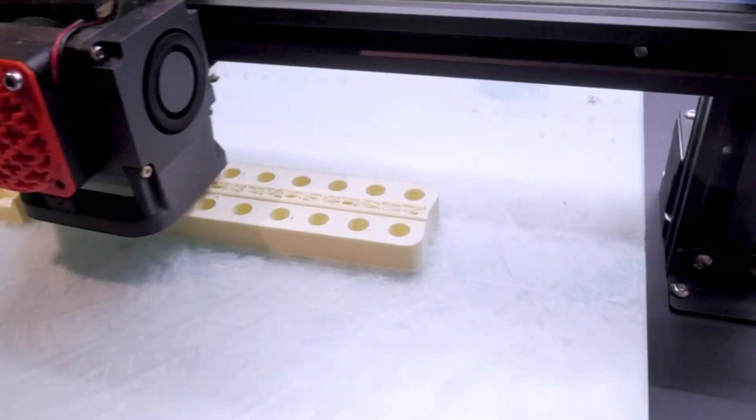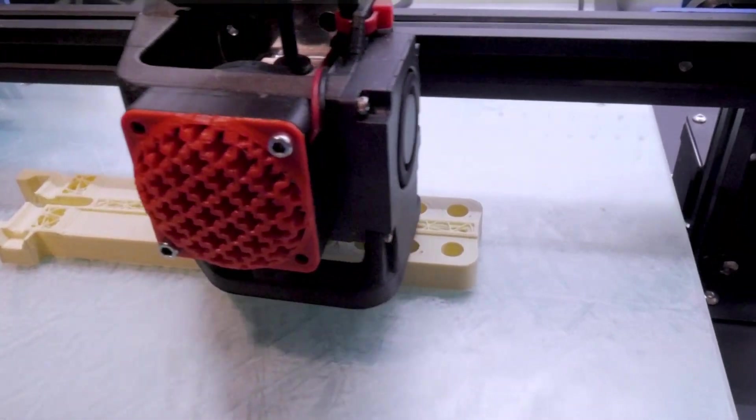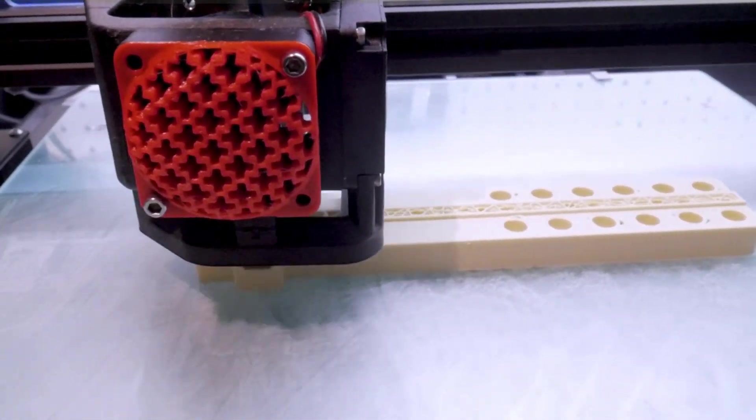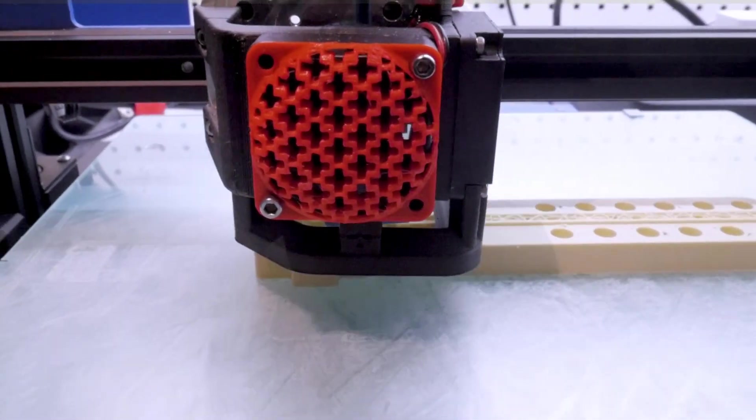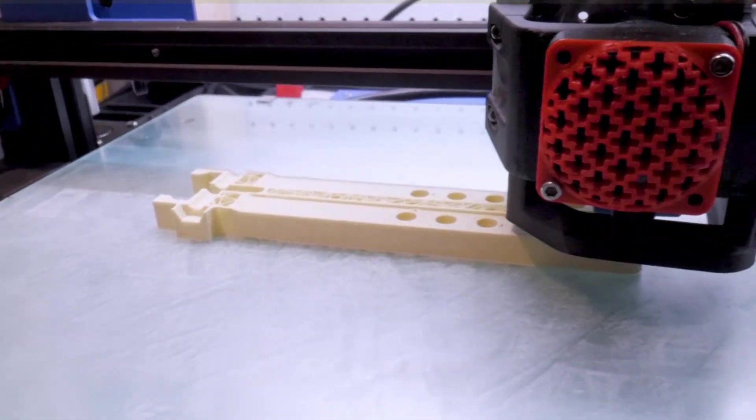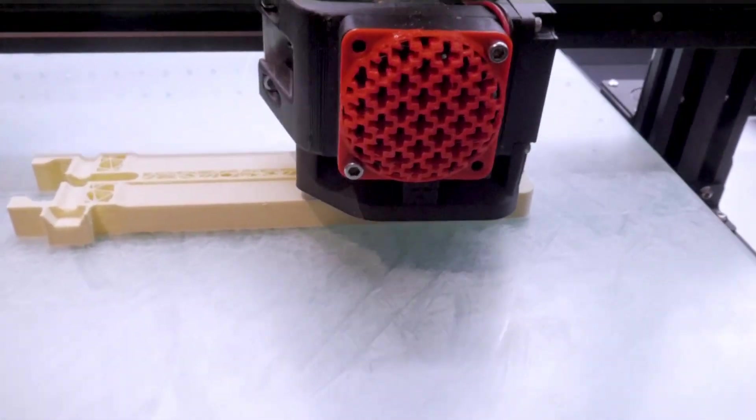Despite most layers going down fine, I did notice I was still getting that under-extrusion on the top solid infill. You can see those gaps around the holes in this clip here. So it wasn't a problem with the printer - it seems to be a problem with perhaps the filament.